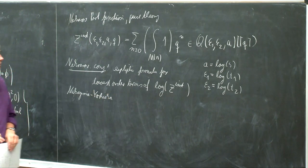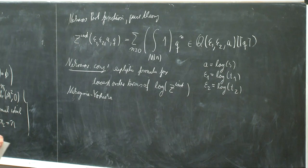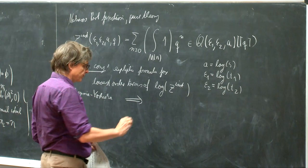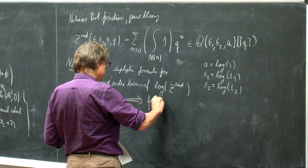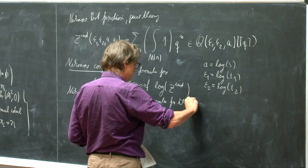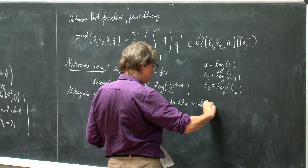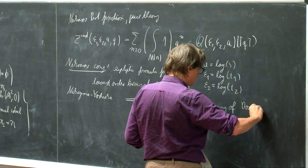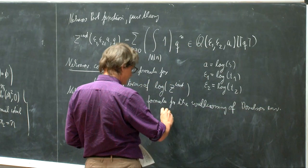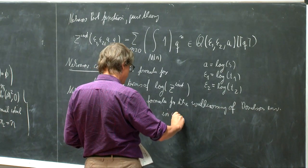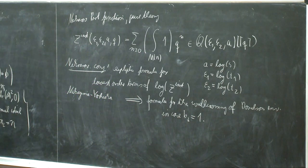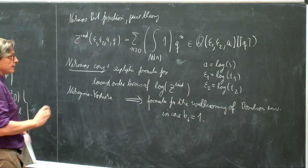And from this, by some argument, one can deduce the formula for the wall crossing of the Donaldson invariants in case P plus is equal to 1. So this is related to Mochizuki's talk.